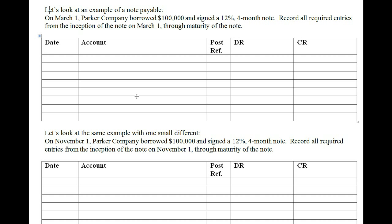On March 1st, Parker Company borrowed $100,000 and signed a 12%, four-month note. We need to record all required entries from inception on March 1st through maturity. On that date, we borrowed cash, so cash goes up — debit cash $100,000. We also need to credit notes payable for $100,000, since this is a four-month note and therefore a current liability. Our financial position remains in balance.